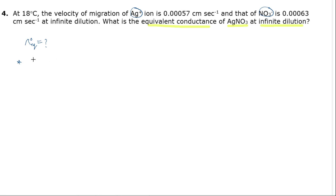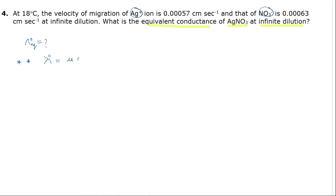A very important thing to be remembered: equivalent conductance is equal to velocity of migration into Faraday.